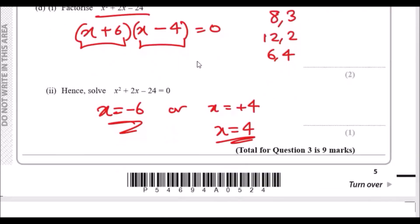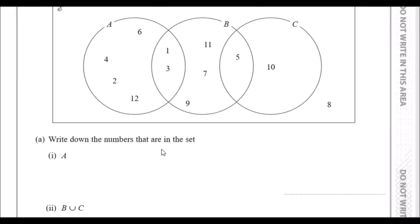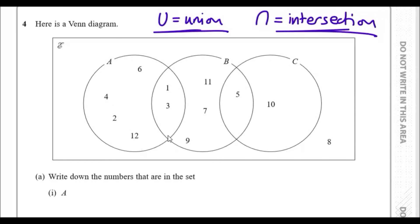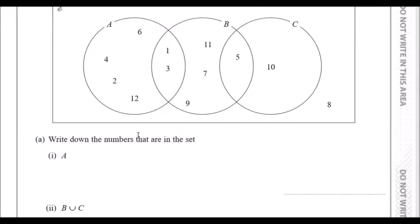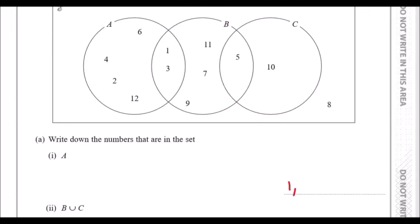Number four is a Venn diagram question. Key notation: the ∪ symbol means union — the combination of everything. The ∩ symbol means intersection — elements common to both sets. Part a: write down the numbers in set A. Looking at the whole circle A, we have: 1, 2, 3, 4, 6, and 12.